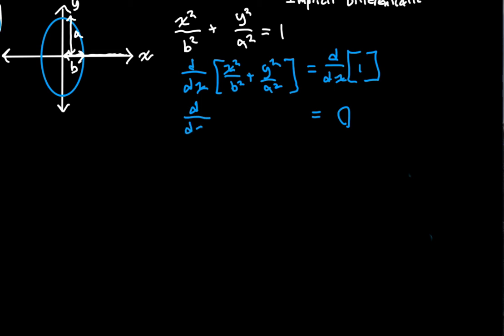And then I can split up the left side into two derivatives. It's going to be the derivative with respect to X of X squared over B squared plus the derivative with respect to X of Y squared over A squared.